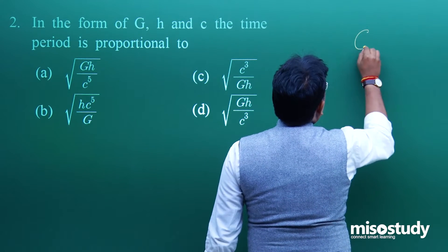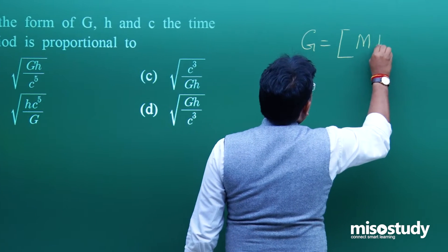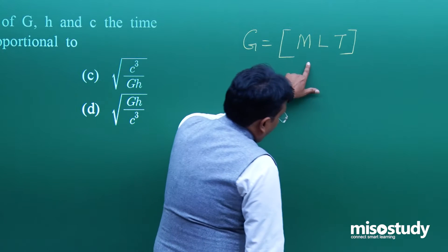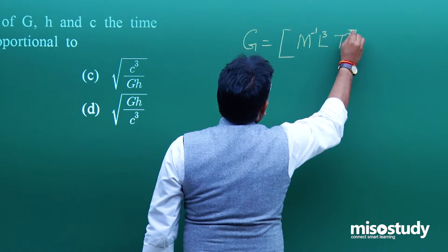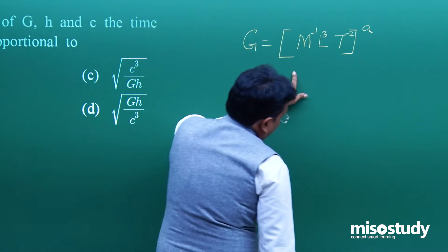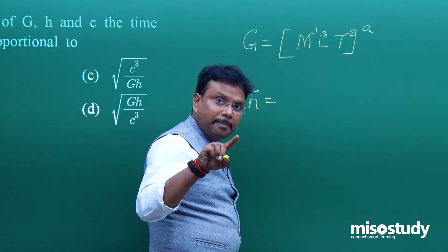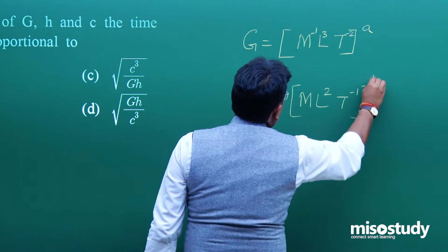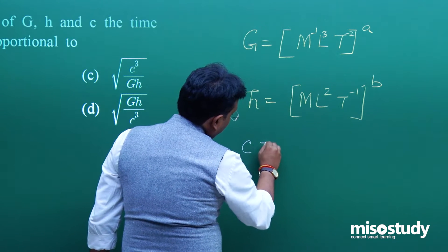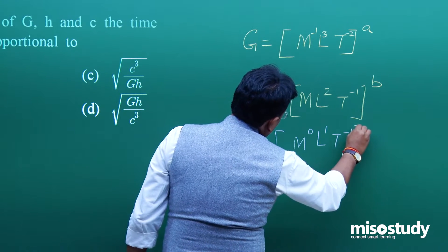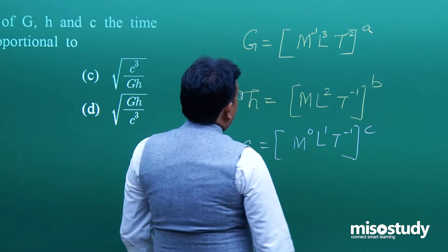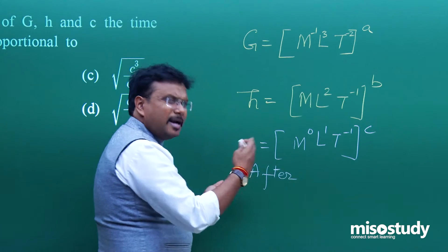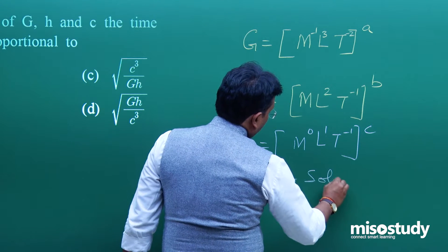Dimensional formula of G in terms of M, L, T: From F equals minus G M1 M2 upon R square, I can write M^-1 L^3 T^-2 to the power A. Then Planck constant E equals H C upon lambda, so H equals M L^2 T^-1 to the power B. Then C equals M^0 L^1 T^-1 to the power C. Now you can solve from left hand and right hand parts. After solving - equate the numbers.